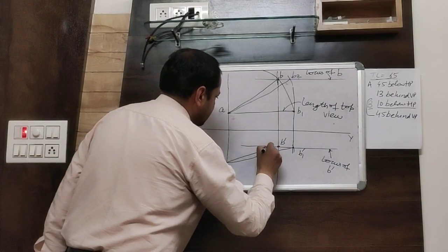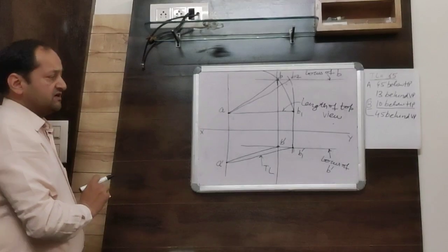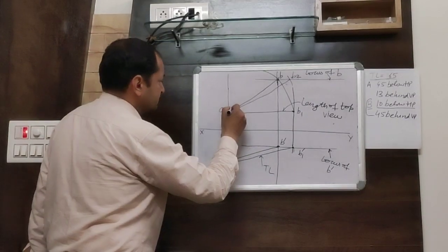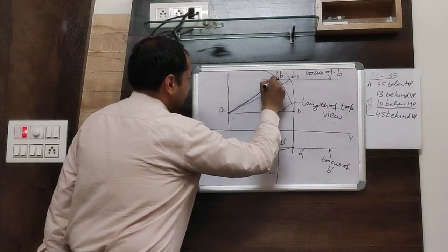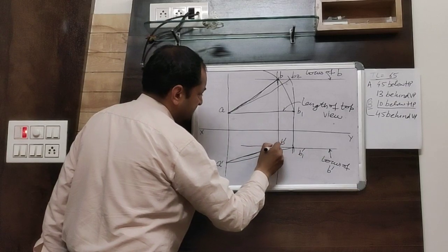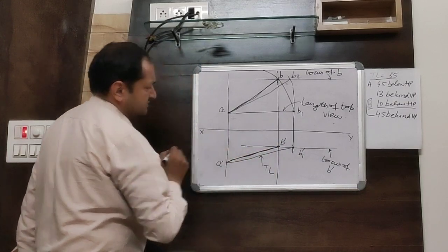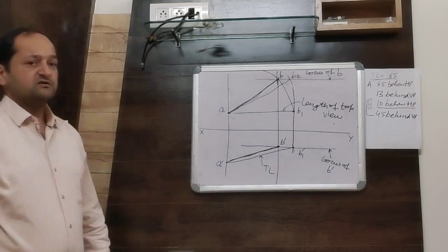Hence, you get the point B dash and join A dash with B dash. Now, these are the required projections. I will join these lines by continuous thick lines. These are the required projections.